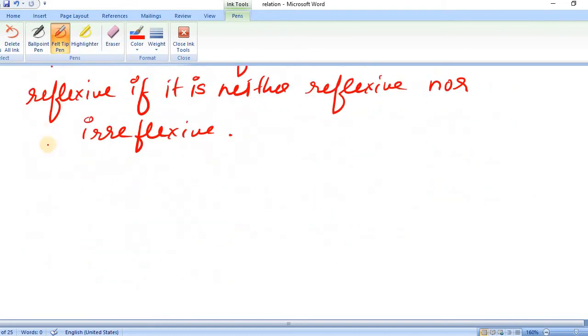Or we can define it in this way, that R will have (a,a) for some a belongs to set A.